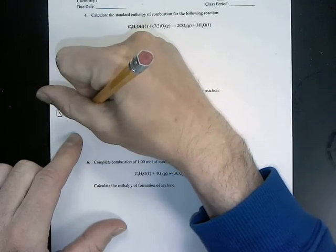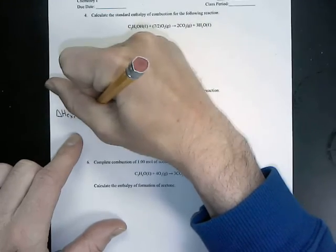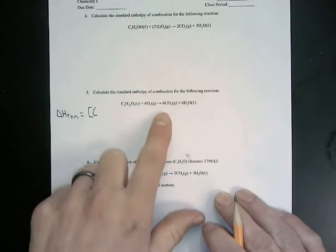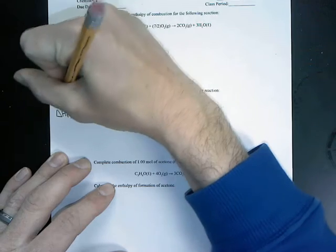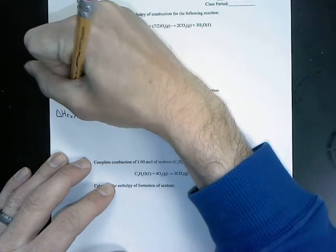And we start this out here with brackets and a parenthesis. We have to start with the products to find our delta H of our reactants.